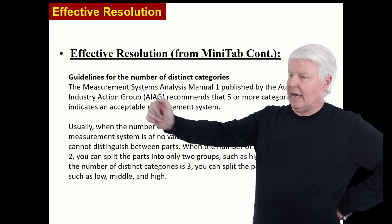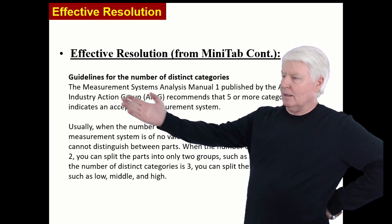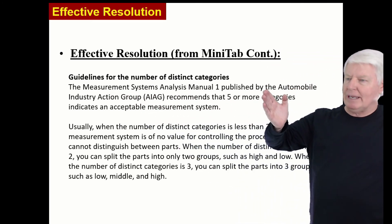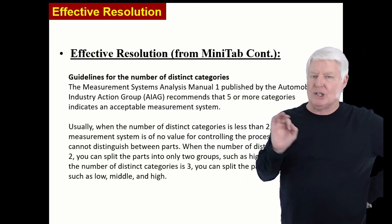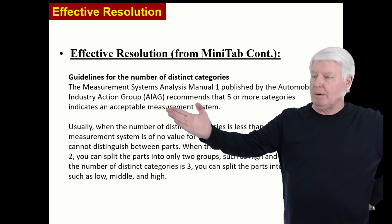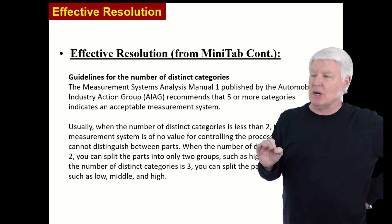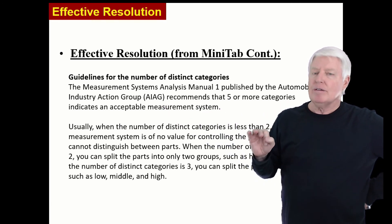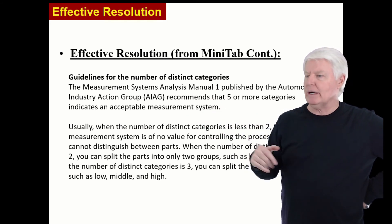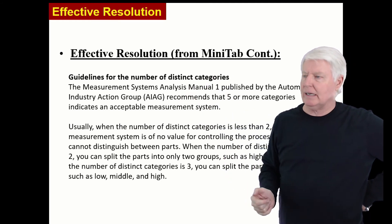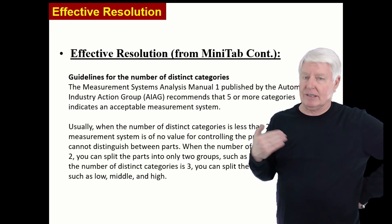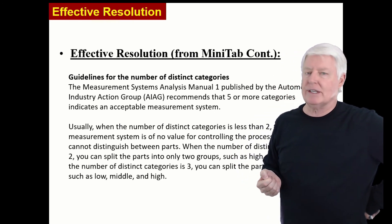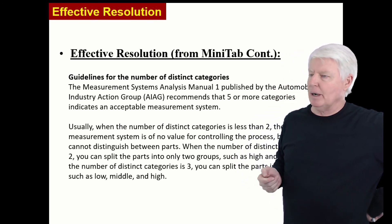Guidelines for the number of distinct categories. What are they? The measurement system analysis, manual one, published by the Automobile Industry Action Group, or AIAG, which is what most people follow. The automotive industry has done a great job of setting standards for many things, including measurement. And everyone else says, why do we need to reinvent the wheel? We'll just take on to the automotive industry's definition and recommendations. And I think that's smart because the industry is very good at using statistics and processes.